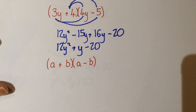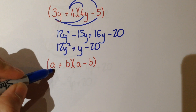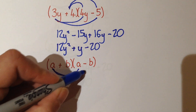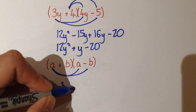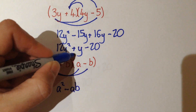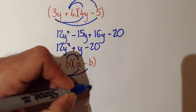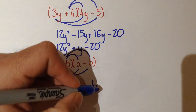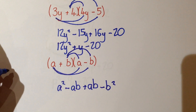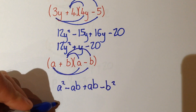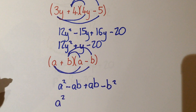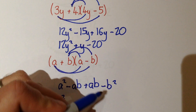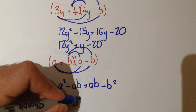Here we've got an example with only letters involved. We do the exact same thing: a times a gives a squared. A multiplied by negative b gives minus ab. b multiplied by a gives plus ab. And then positive b times negative b gives us minus b squared. Collecting like terms together: there's only one a squared term, so we have a squared. Minus ab and plus ab cancel each other out, so we wouldn't have an ab term. We then have minus b squared at the end.